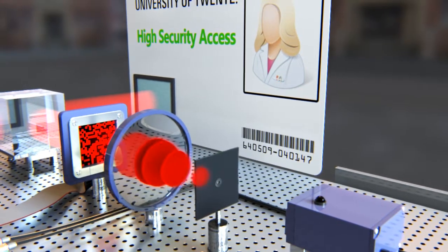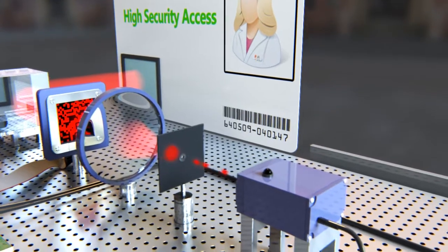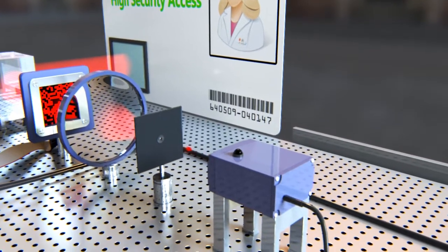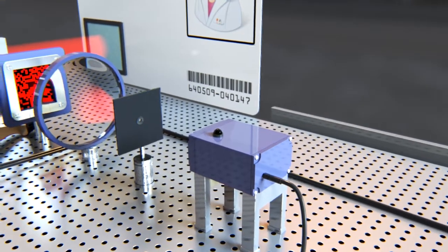This resulting plane wave is then focused by a lens onto a hole in an analyzer plate. A large enough fraction of the photons going through this hole and then being registered by the photon detector results in access being granted.